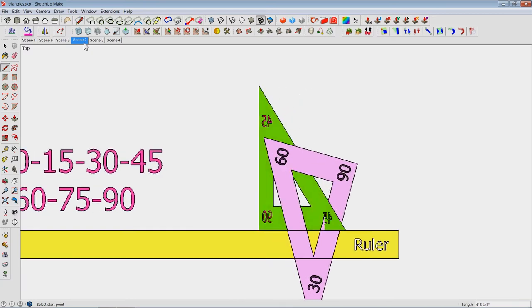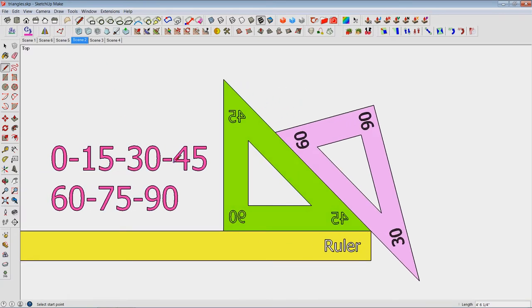What about some other kinds of measurements? Well, 15 degrees. If you put the triangles together like this you can draw a 15 degree line and you can make yourself a little drawing. This is a 15 degree angle.